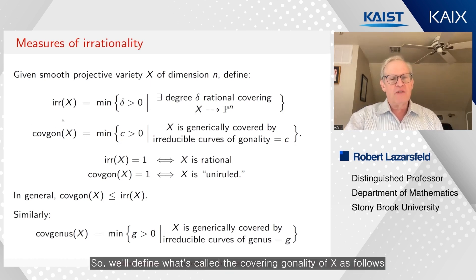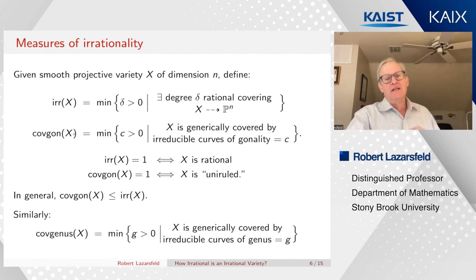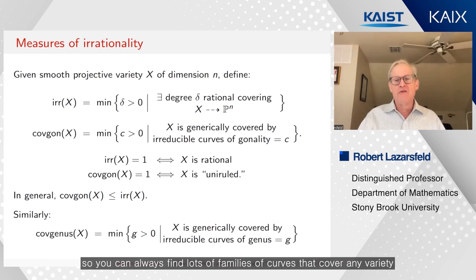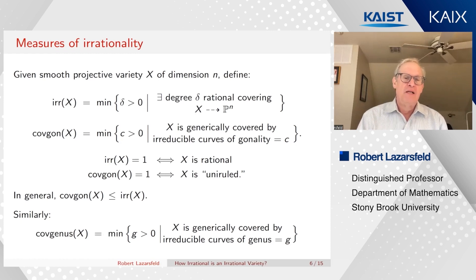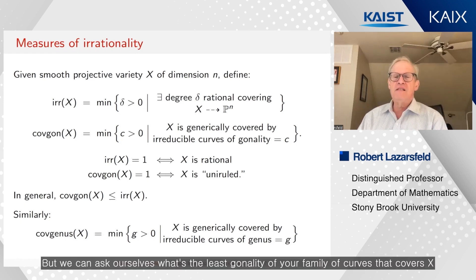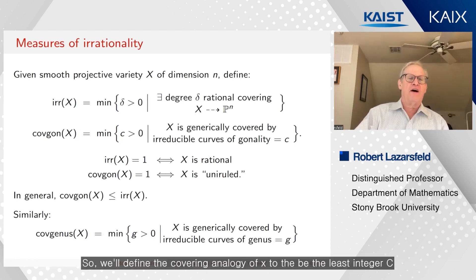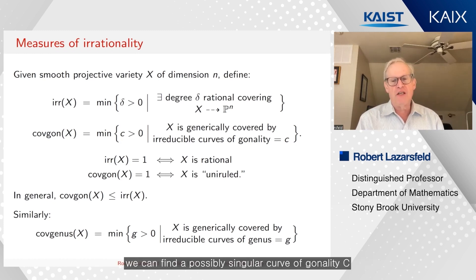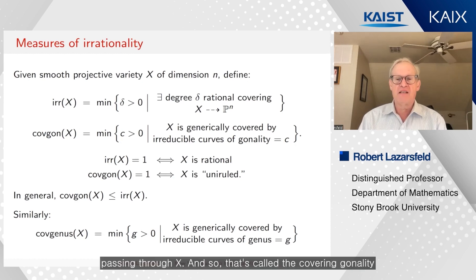So we'll define what's called the covering gonality of X as follows. If you have a projective variety, any projective variety has tons of curves on it. So you can always find lots of families of curves that cover any variety. But we can ask ourselves, what's the least gonality of family of curves that covers X? So we'll define the covering gonality of X to be the least integer c, so that through a general point of our variety, we can find a possibly singular curve of gonality c passing through X. And so that's called the covering gonality.